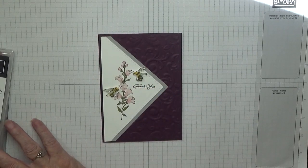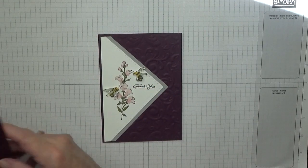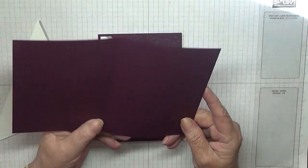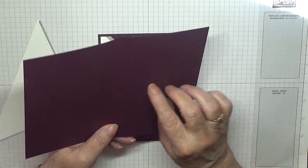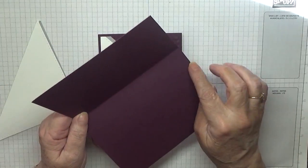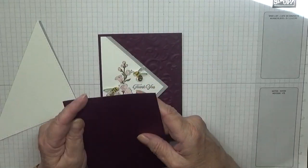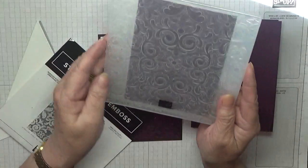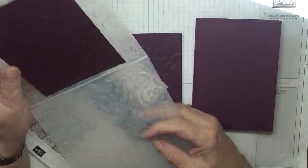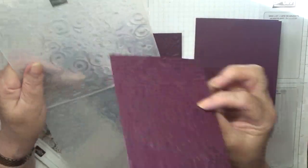Card blank I've got Blackberry Bliss here, 8 and a quarter scored at 4 and 1/8 by 5 by 7/8. I've got a piece of Blackberry Bliss—as you can see, I've already run it through the embossing folder. This is 5 and 5/8 by 3 and 7/8.